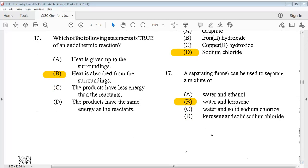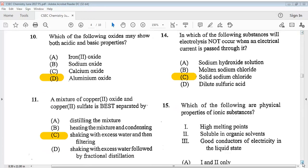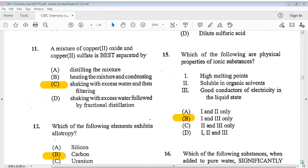Let's go on to number 14. It says, in which of the following substances will electrolysis not occur when an electrical current is passed through it? The answer is C, solid sodium chloride. Question 15 says, which of the following are physical properties of ionic substances? 1, high melting points. 2, soluble in organic solvents. 3, good conductors of electricity in the liquid state. The answer is 1 and 3 only, B.